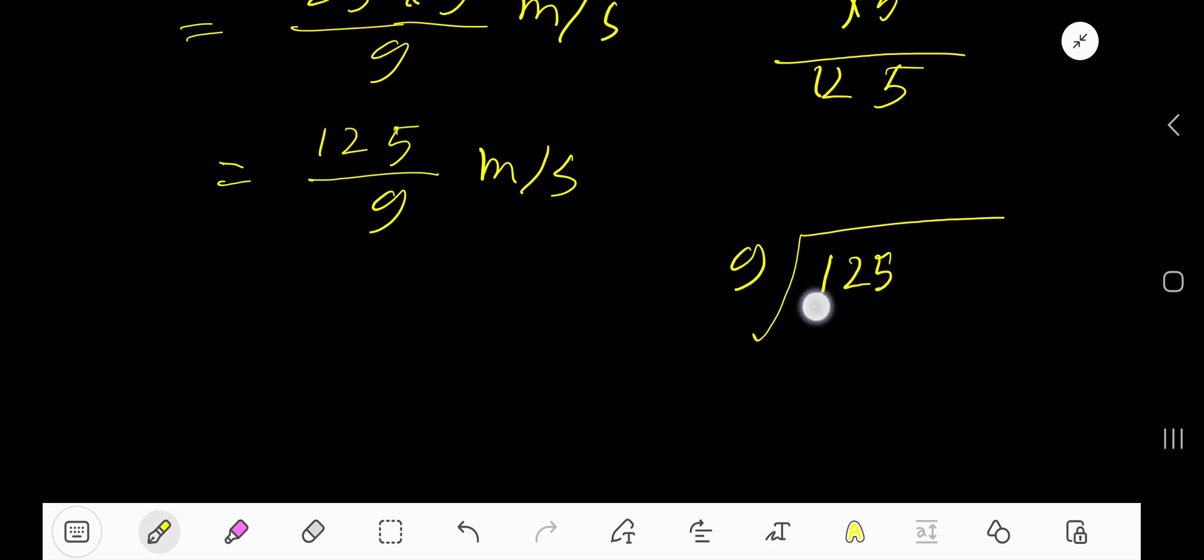9 goes into 12 how many times, 1 times. 1 times 9, 9. Subtract 3, bring down this 5. 9 goes into 35 how many times, 3 times. 3 times 9, 27.